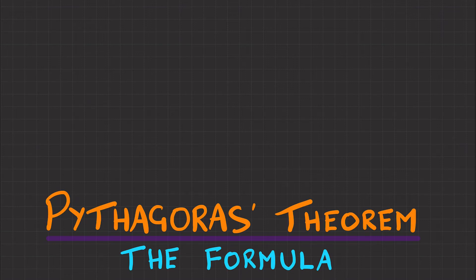We'll have a look at Pythagoras' formula and how it's formed. Well, firstly, the formula is A squared plus B squared equals C squared.